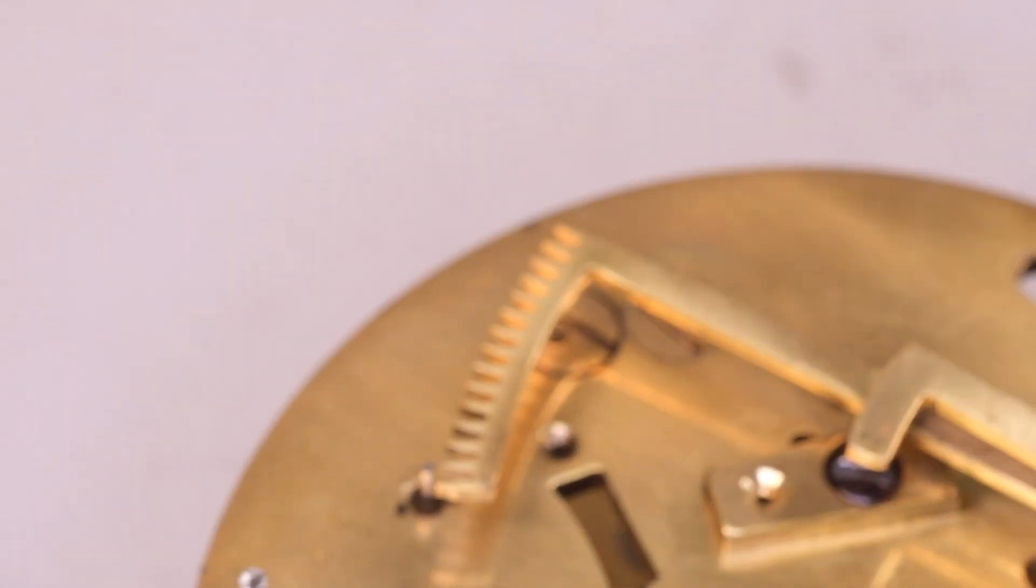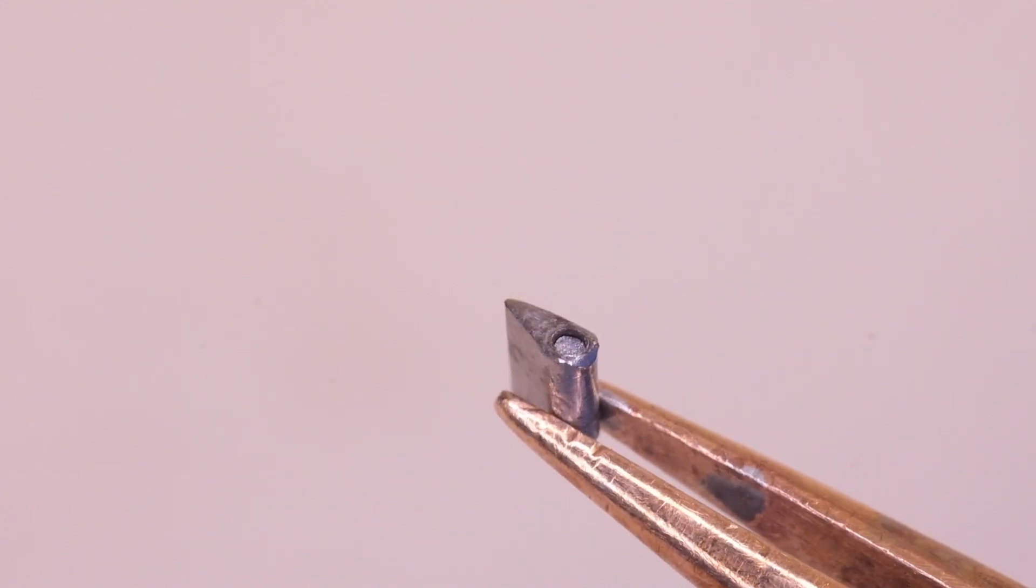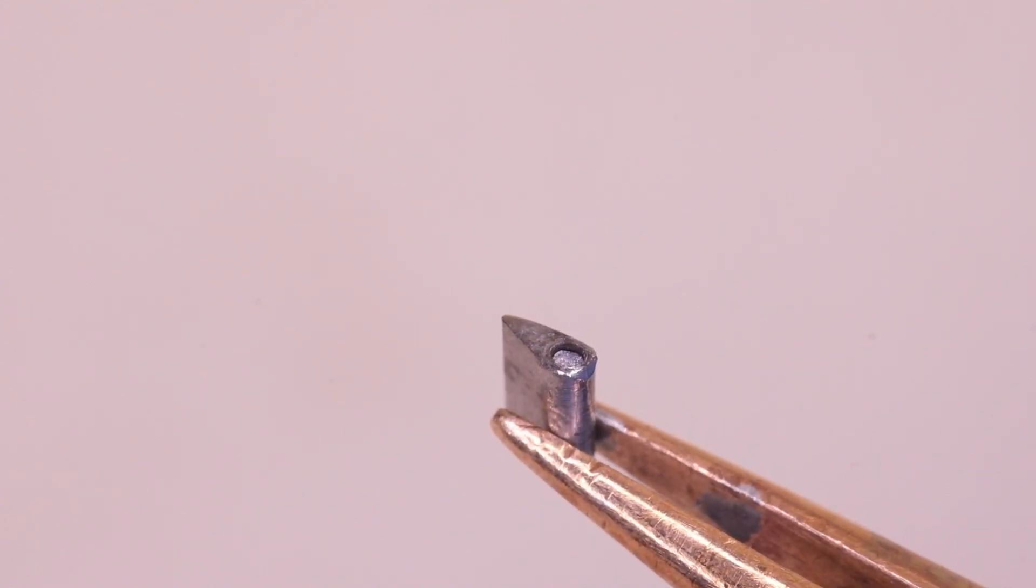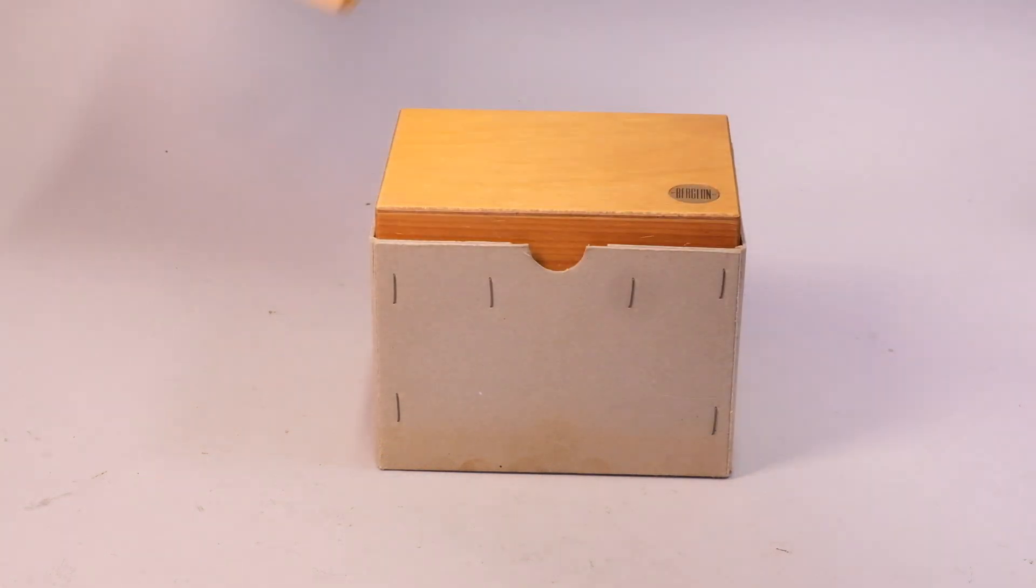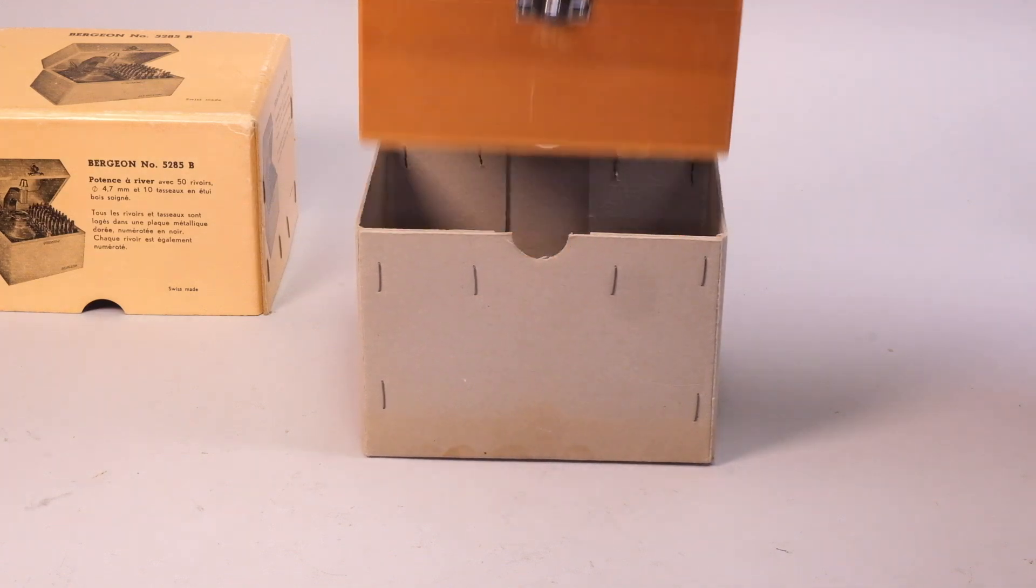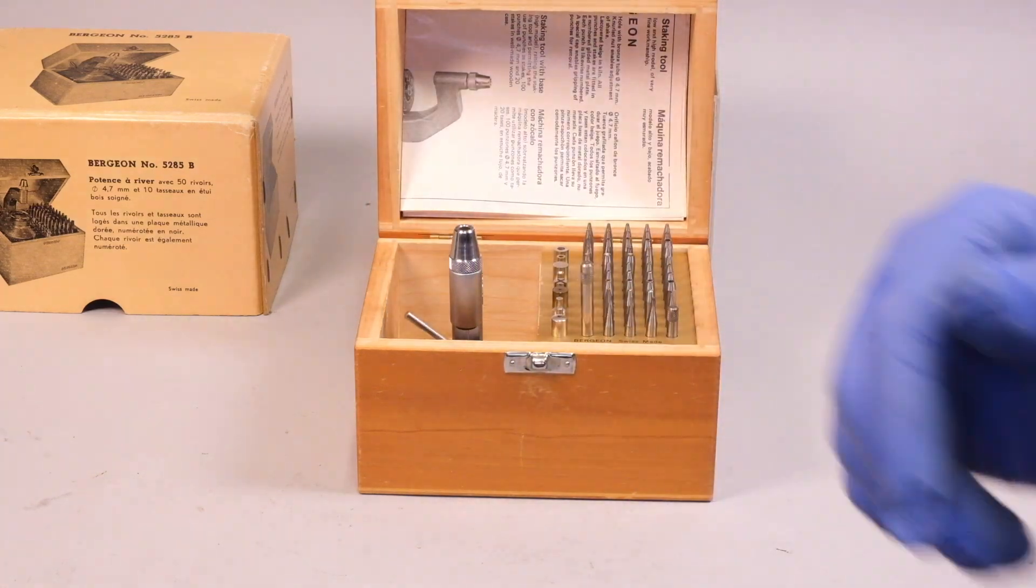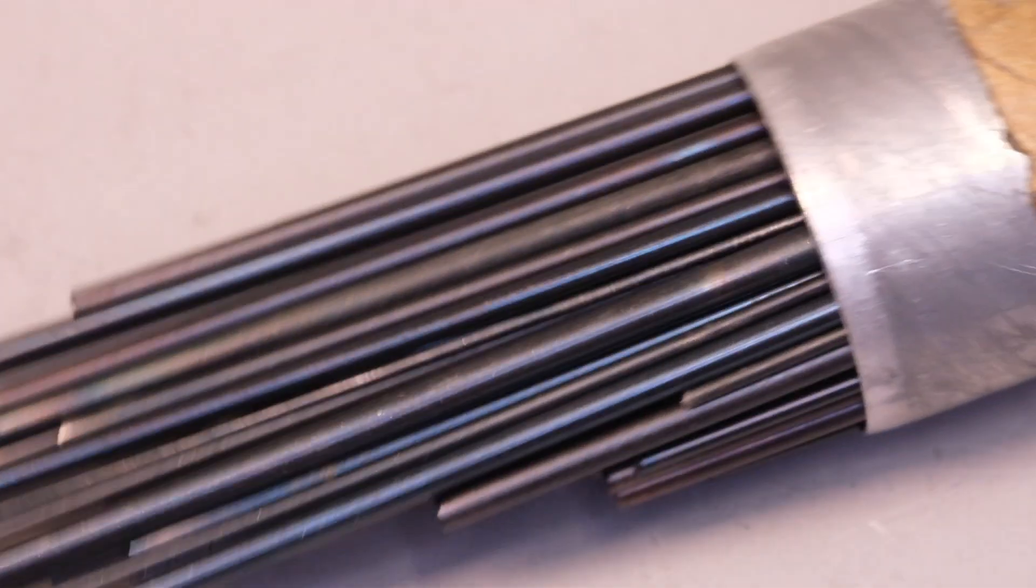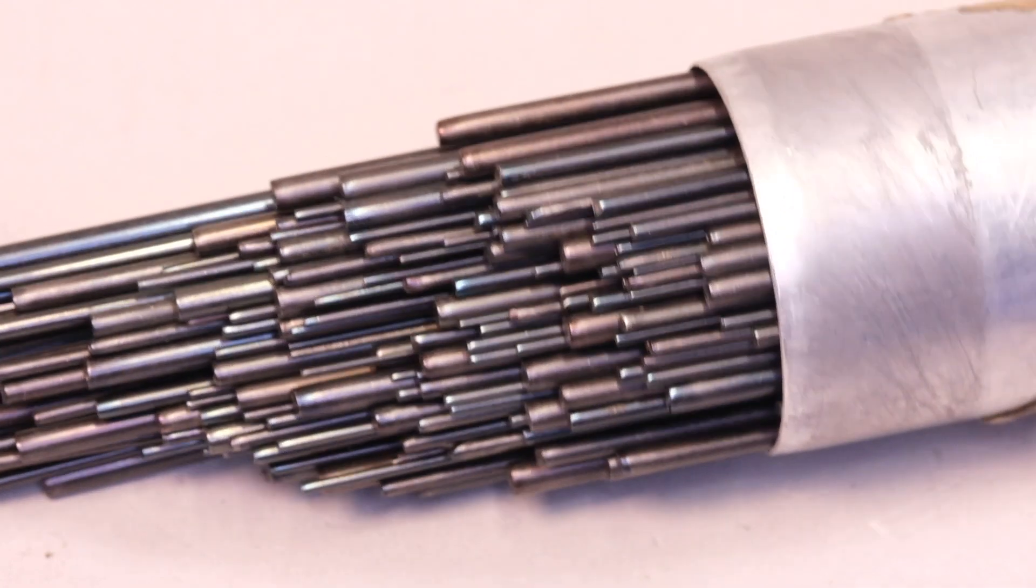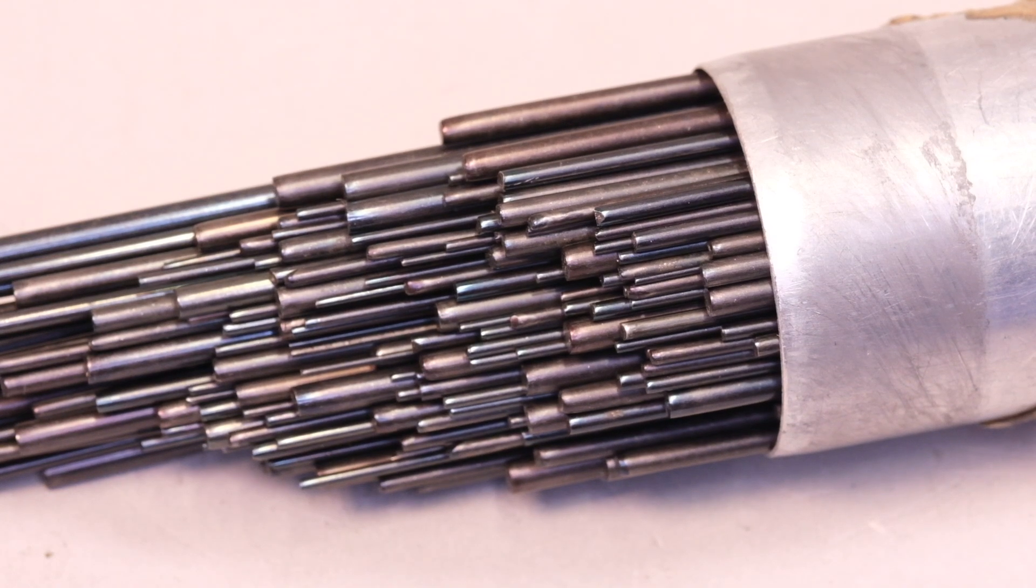So the first thing we need to do is to get the stub of the arbor out of the old gathering pallet, and to do this I'm going to use my staking set. Now a staking set is a big investment, but worth every penny if you can afford one. For years I used an old one, a part set, and that was absolutely fine. It's only very recently that I've updated to this set that actually is complete, which is a lovely thing to use, although it's quite a small set. If you don't have a staking set, you can always use blue pivot steel and make little punches for jobs like this.